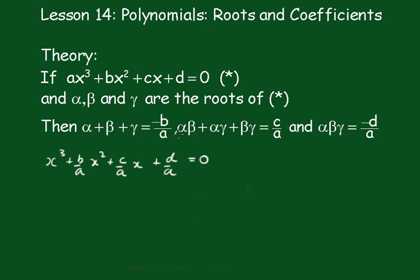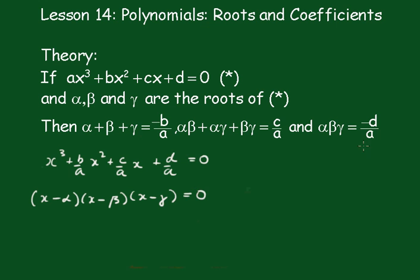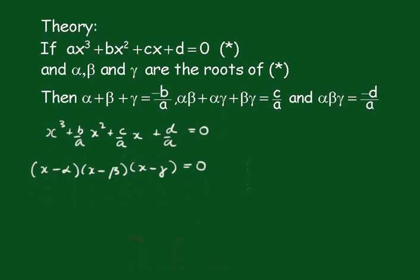Now because alpha, beta and gamma are the roots we can write this equation in the form (X - alpha)(X - beta)(X - gamma) = 0. Now we've just got to expand that out.